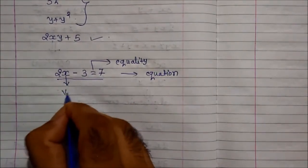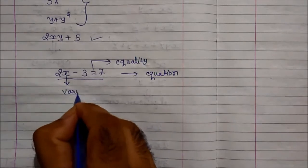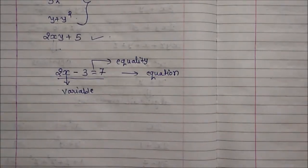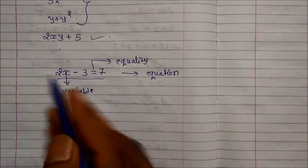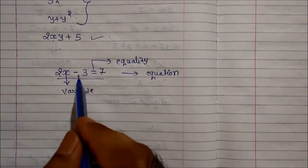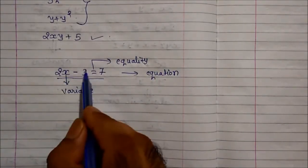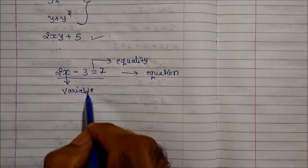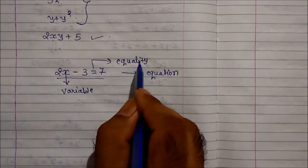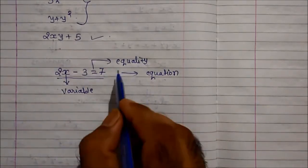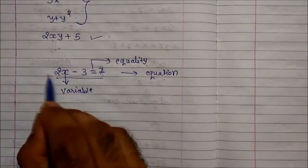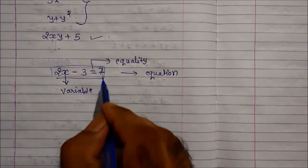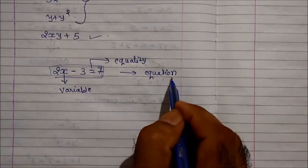The x is nothing but the variable. Any alphabet from a to z can be used as a variable. So here we have x. x is the variable. The 'is equal to' sign should be there in the equation. And the whole mathematical form is known as an equation.